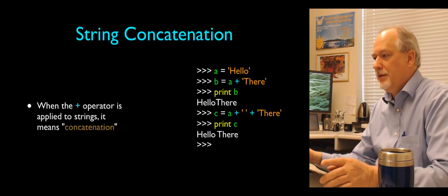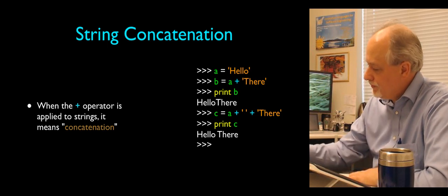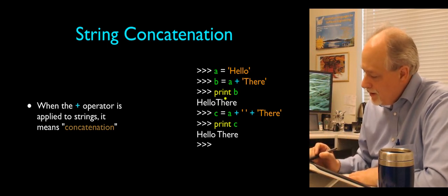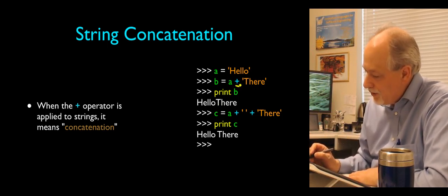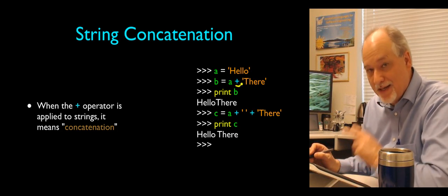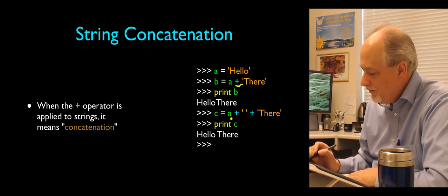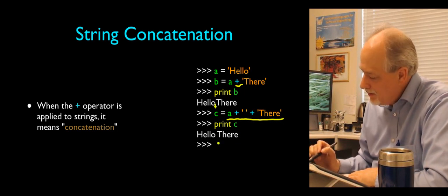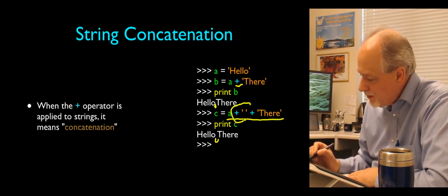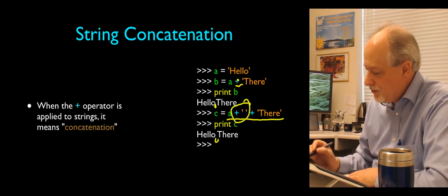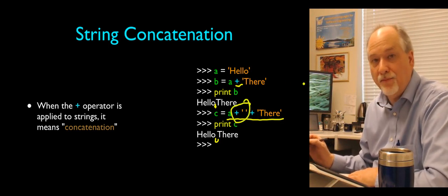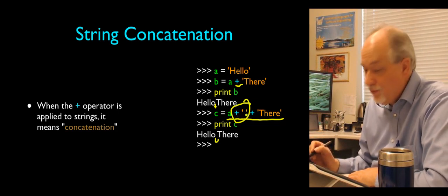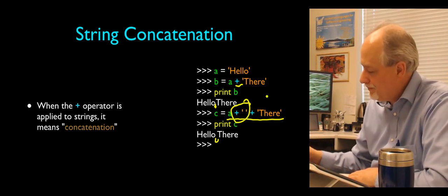We've already played with string concatenation. The concatenation operator does not add a space. If you want a space, you explicitly add it. Without explicit space, 'o' and 't' are right together; with explicit space added, there is a space between them. You can concatenate more than two things and add spaces wherever you want.